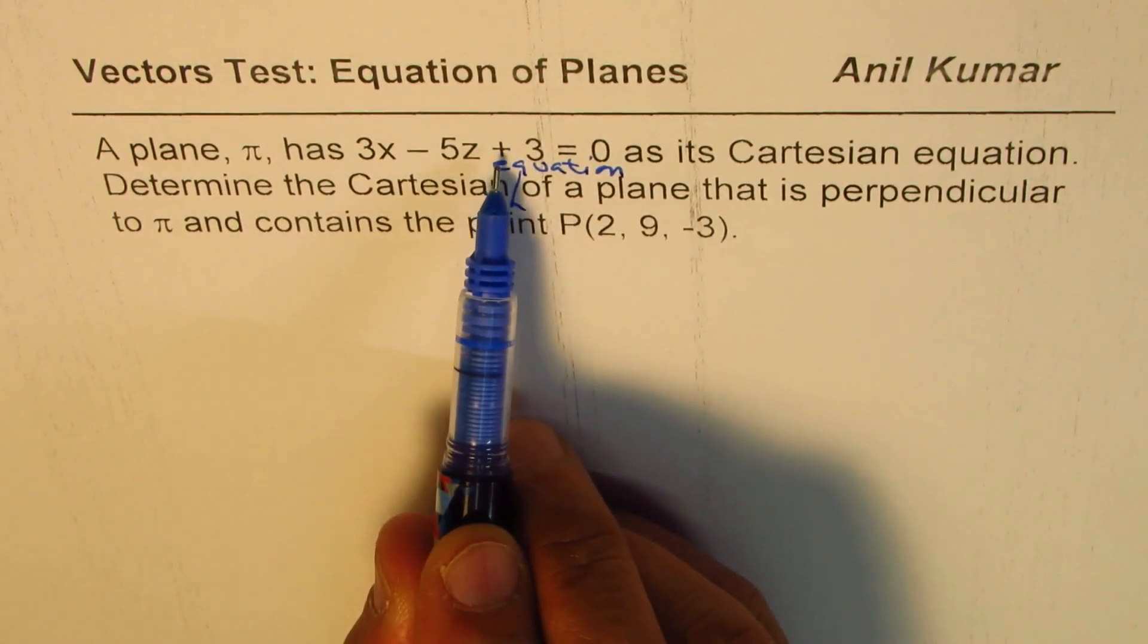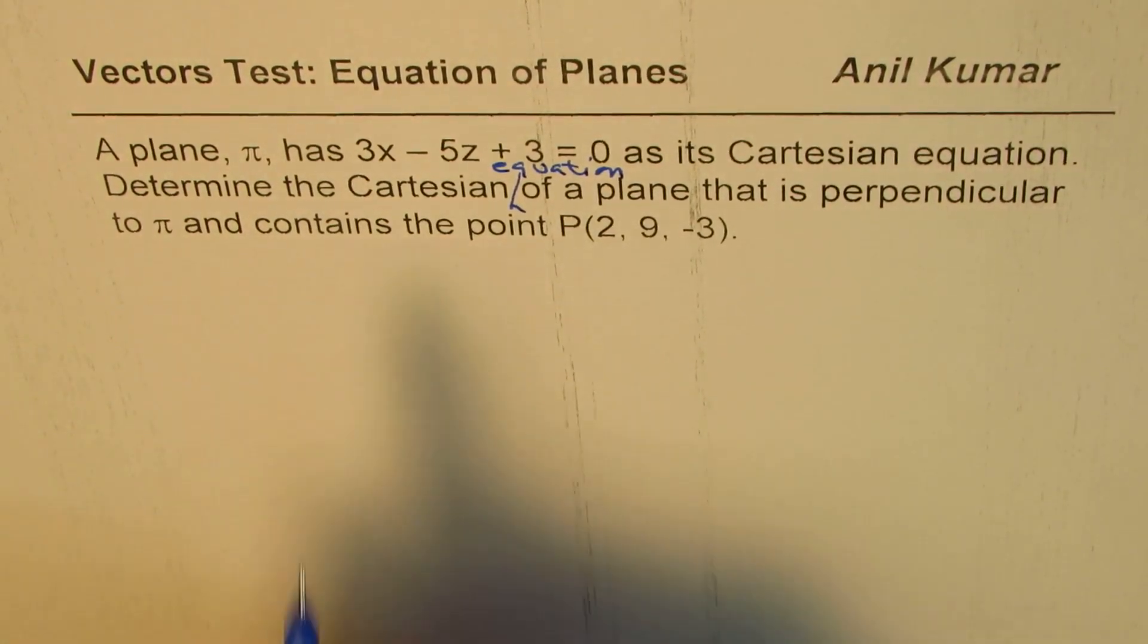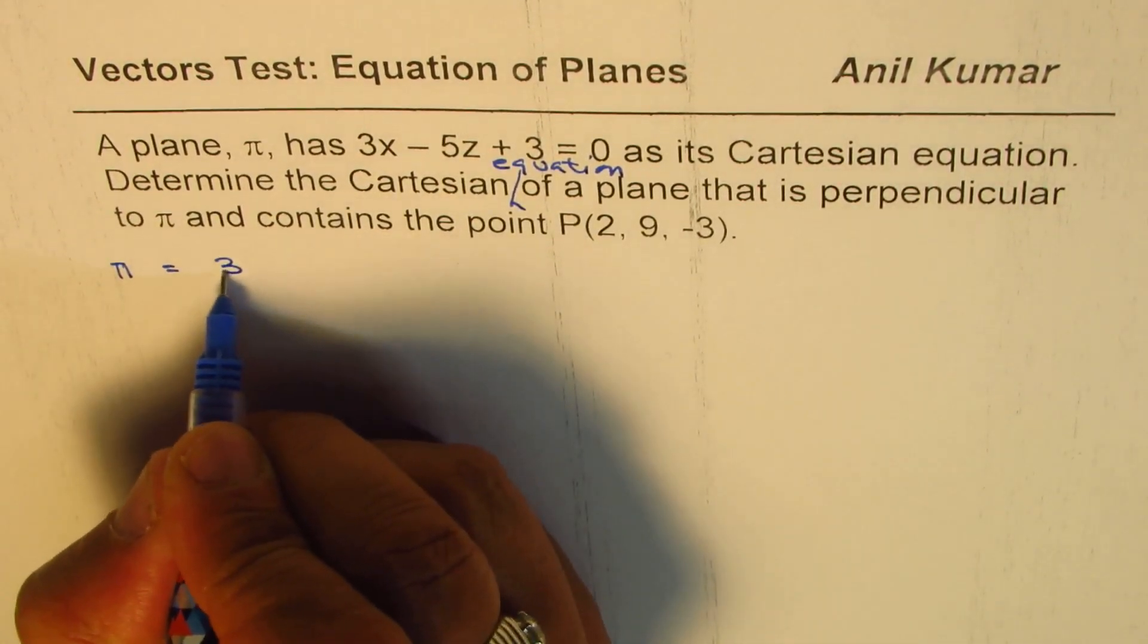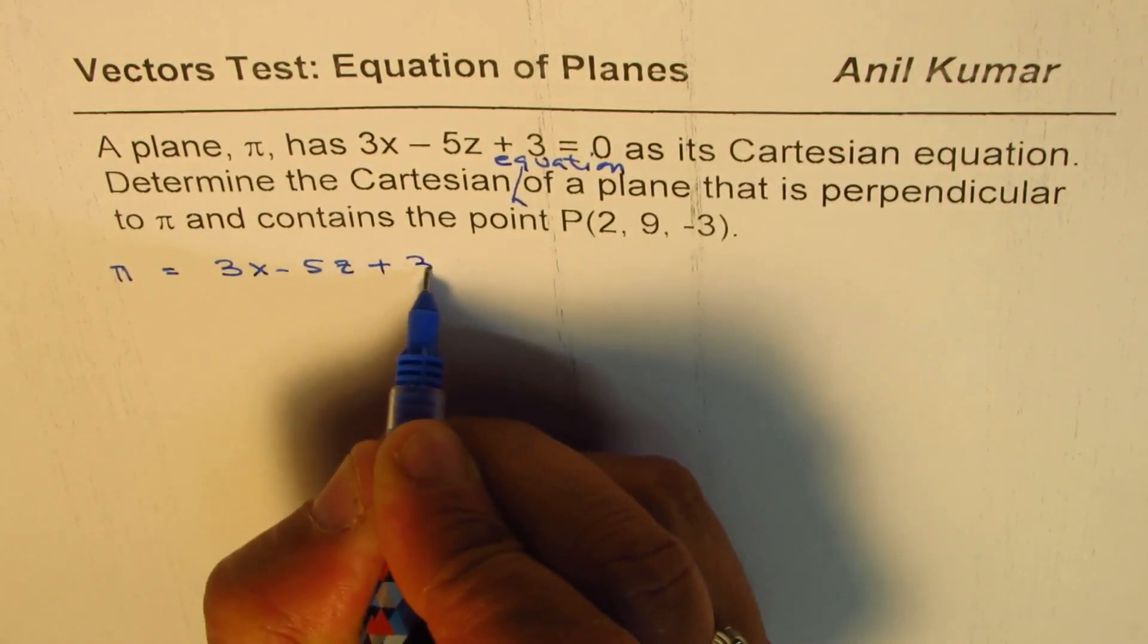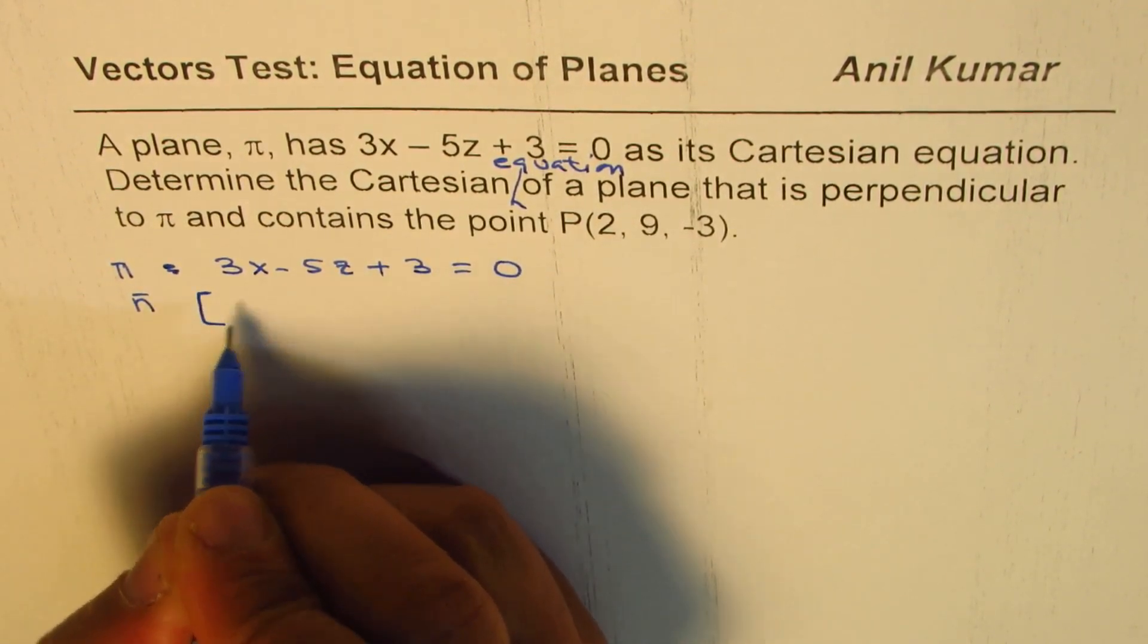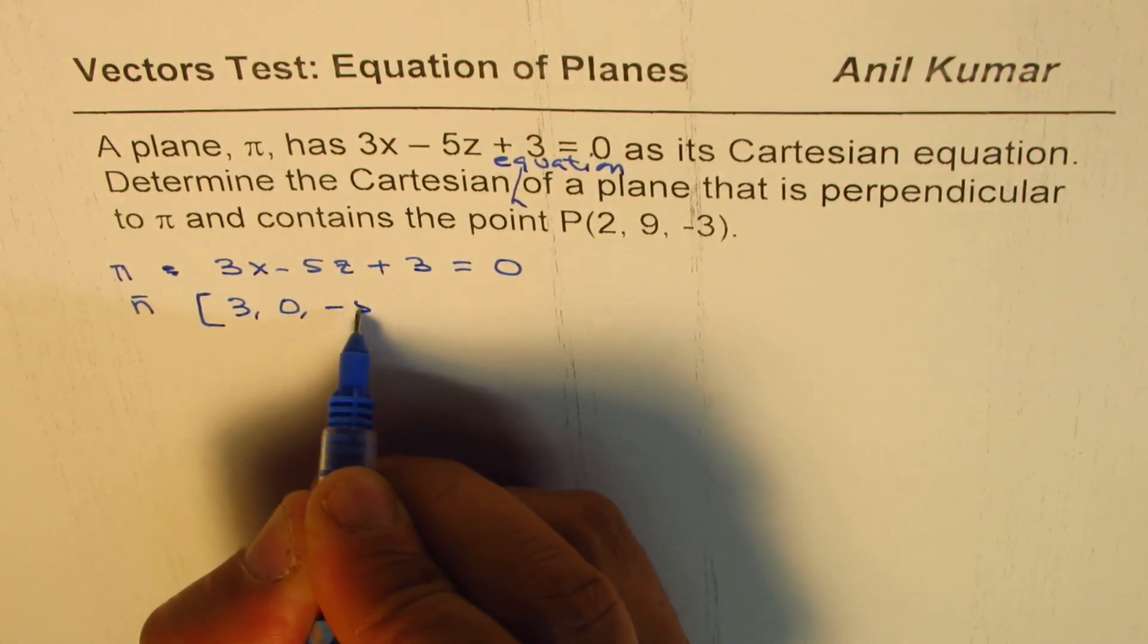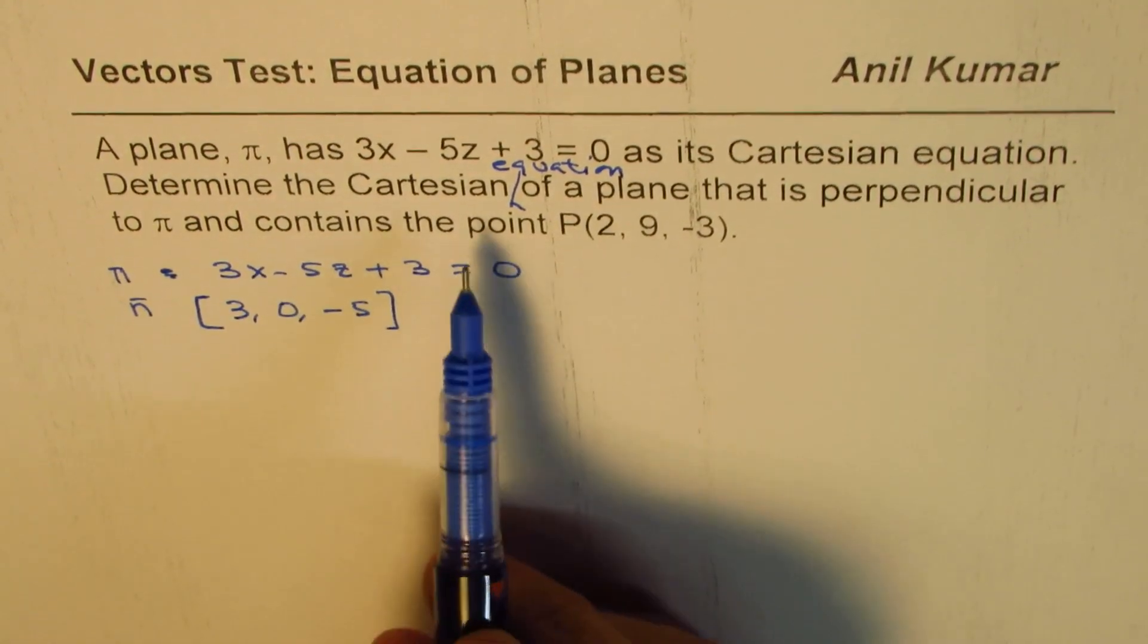So you need to find the Cartesian equation of a plane which is perpendicular to this plane and contains that point P. The concept is that we are given the plane π which is 3x - 5z + 3 = 0, so the normal for this plane is n₁ = [3, 0, -5].